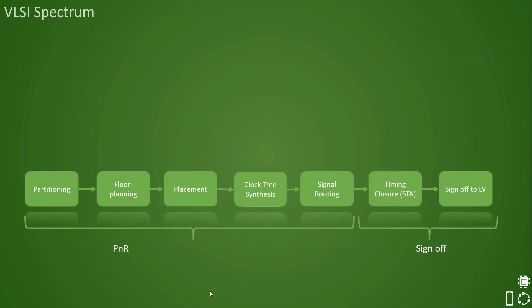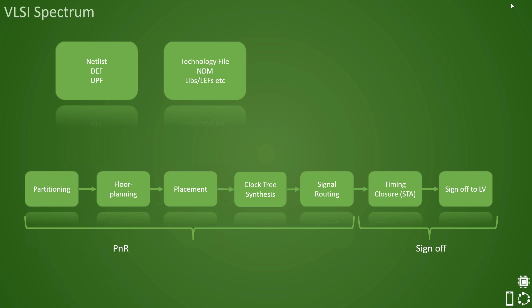The first question is: what are the inputs needed to start the placement stage? We need the floor plan database to start. Sometimes floor planning is done in a different tool from the PNR stage — it totally depends on the chip manufacturing company and the flow they follow. Netlist, DEF, and UPF are mandatory partition-specific inputs needed by the placement tool. Apart from this, technology and standard cell-related physical and timing view files are needed. If the tool is Synopsys, we provide the standard cell NDM — New Data Model — which contains physical and timing views of the cells together. These are partition-specific inputs, along with generic inputs provided to the placement stage.